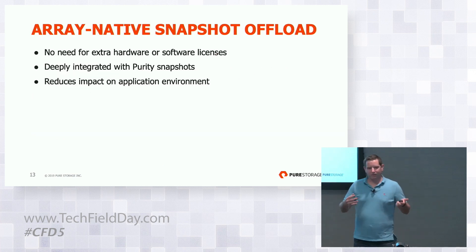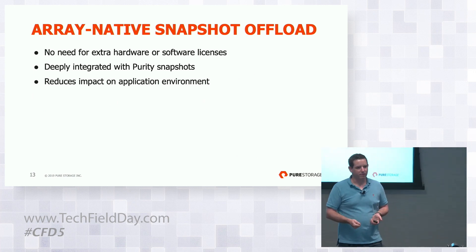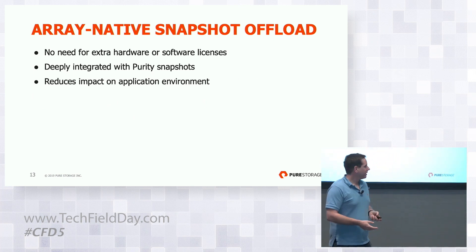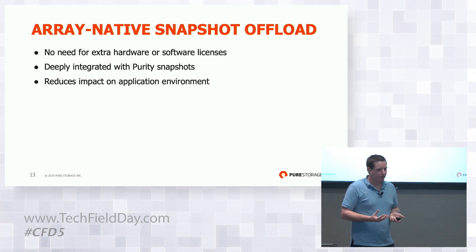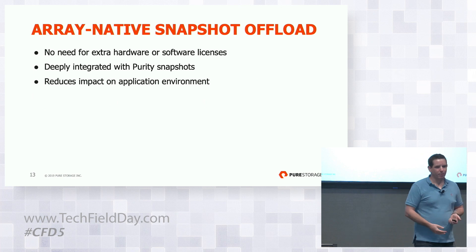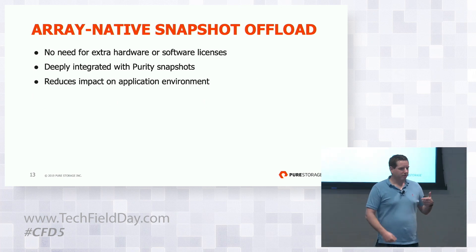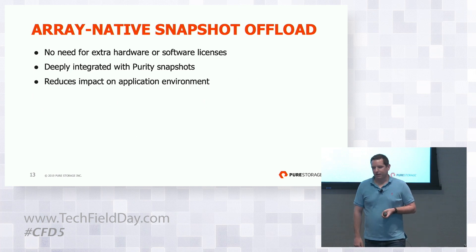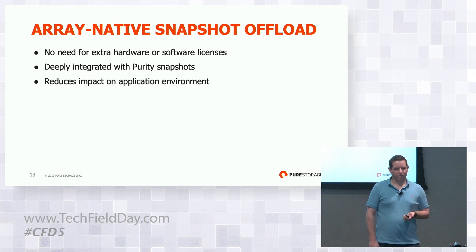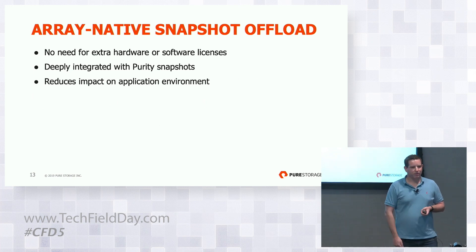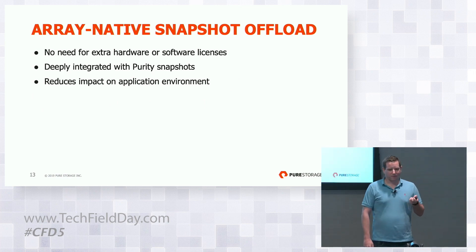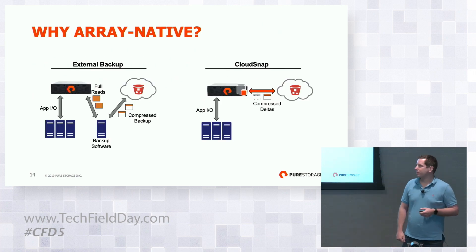CloudSnap is array native. It's built into the Purity system itself, and I think this is really one of the key advantages of providing an efficient system. It means it's less complex for our customers — they don't need any additional hardware or any additional software licenses. CloudSnap comes with our normal Purity software and it's easily available. It's deeply integrated into our Purity snapshotting system, and it also reduces the impact on the application environment for customers.